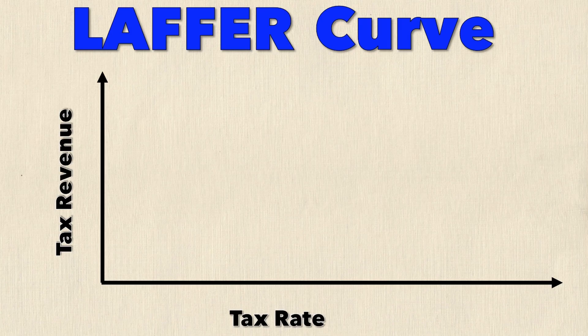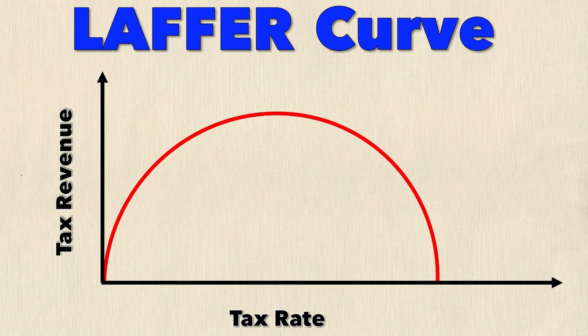He deduced that this relationship looks kind of parabolic — it goes up, reaches a maximum, and then it goes down. Kind of like an upside down parabola or quadratic.